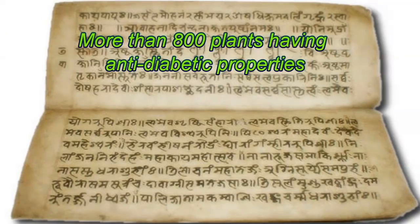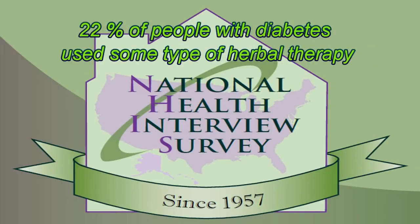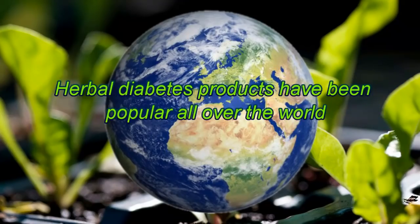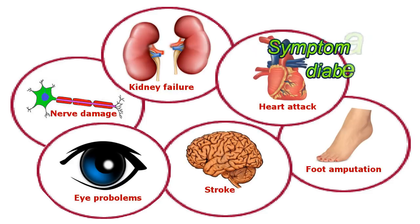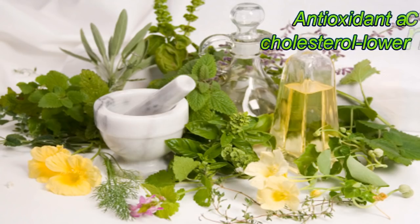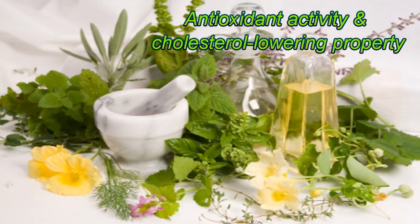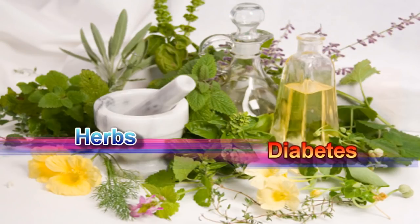As per ancient literature, there are more than 800 plants having anti-diabetic properties, and the literature indicates diabetes was well known since prehistoric age. The National Health Interview Survey found that 22% of people with diabetes used some type of herbal therapy. Certain herbs provide symptomatic relief and prevent diabetes complications. Some herbs can even help in the regeneration of beta cells, overcoming resistance, exhibiting antioxidant activity, and cholesterol-lowering properties in addition to normalizing blood glucose levels.